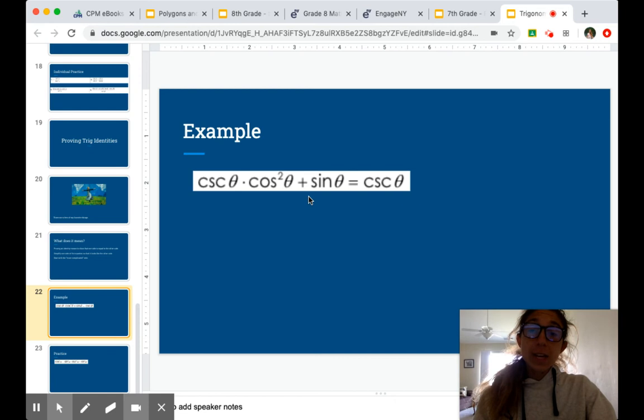Because it's going to be a lot easier to simplify this side than it's going to be to try to expand this. Because remember, we want to use our trig identities to simplify these equations or expressions to be one thing. This already is one thing. So we don't want to expand it. We want to condense.